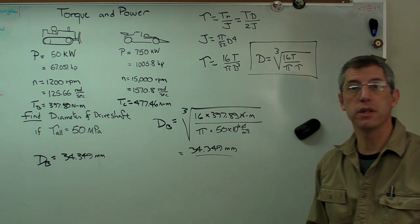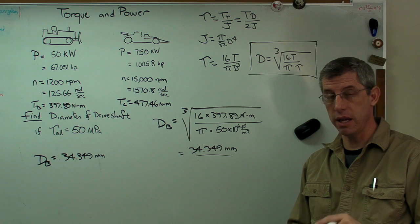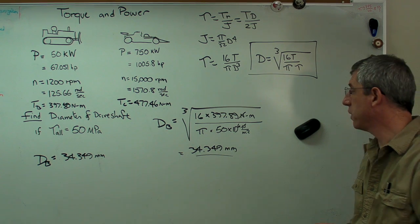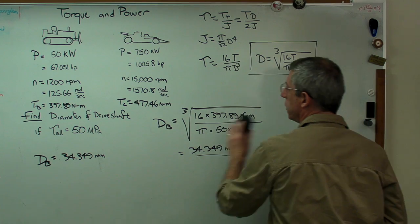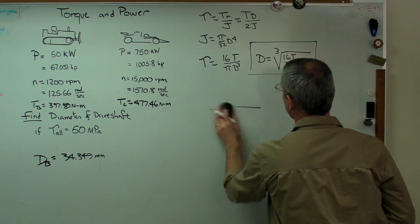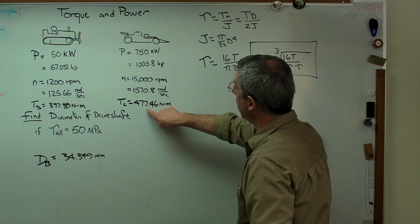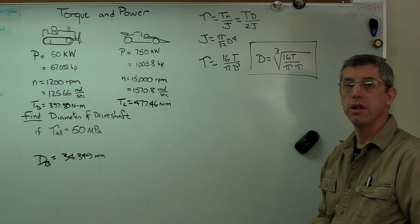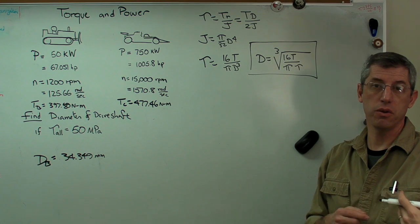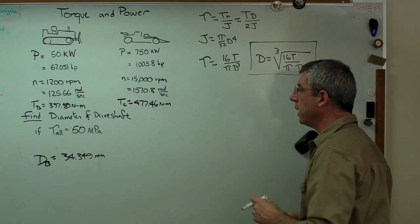I want to be clear, this is the diameter of the shaft coming out of the engine, not the shaft coming out of the transmission to the wheels. For the bulldozer, we've got 34.349 millimeters. Because the engine only has a little bit more torque, the drive shaft coming out of the engine to the transmission in the race car is really only going to be a little bigger.